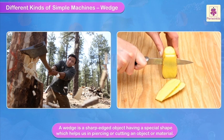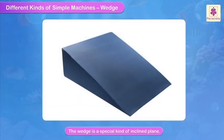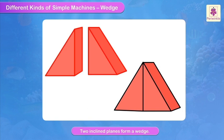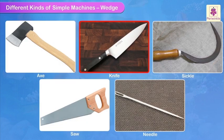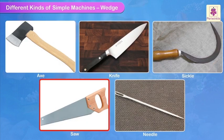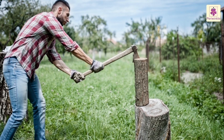Wedge. A wedge is a sharp-edged object having a special shape which helps us in piercing or cutting an object or material. The wedge is a special kind of inclined plane — place two inclined planes back to back and we get a wedge. Axe, knife, sickle, saw and needle are examples of a wedge. When force is applied to the thick end of the wedge, that force gets transferred to the thin end, and that pressure is enough to cut the object into pieces.